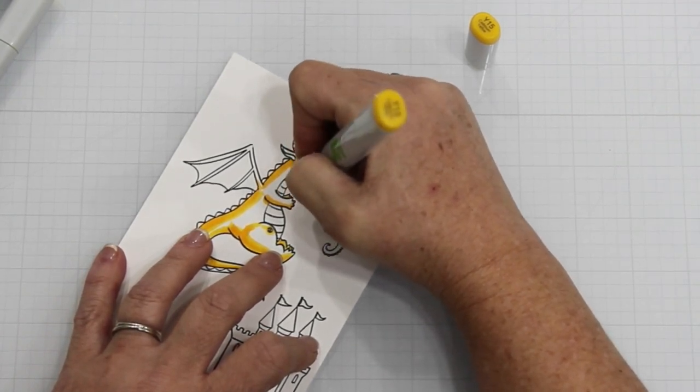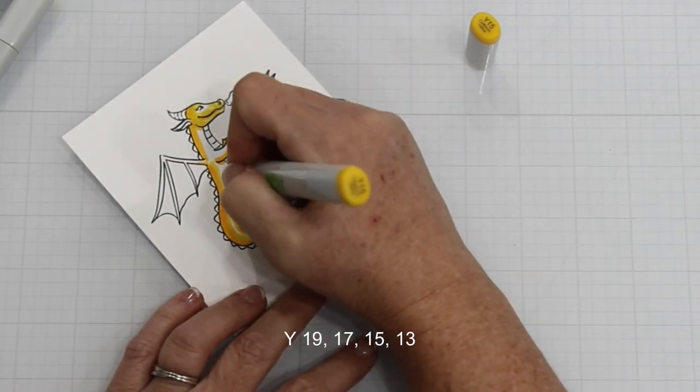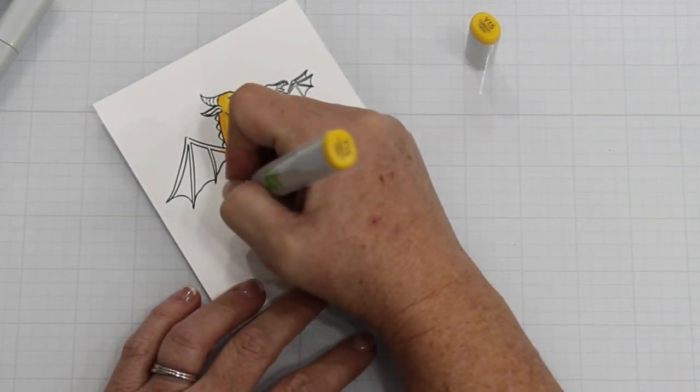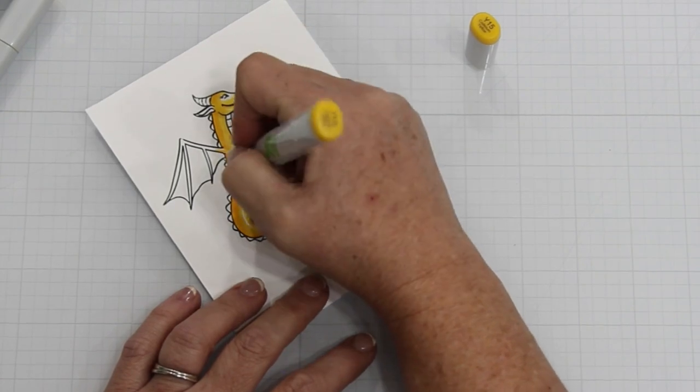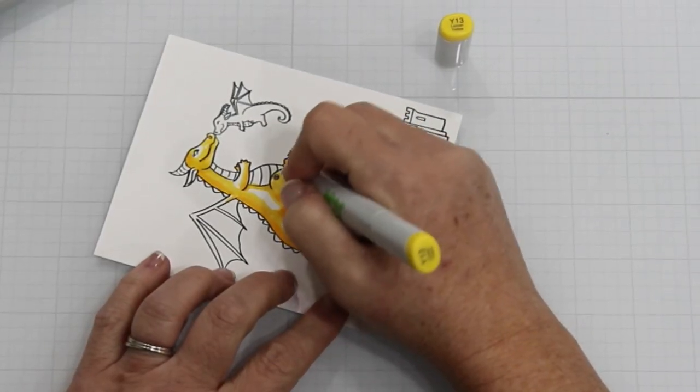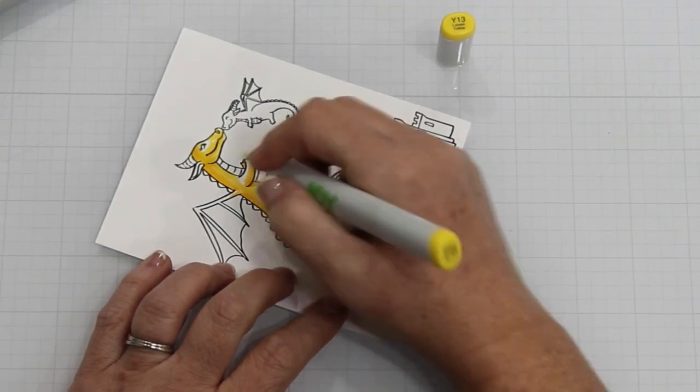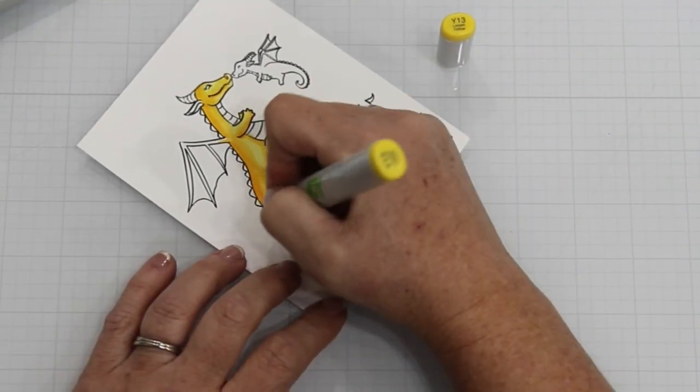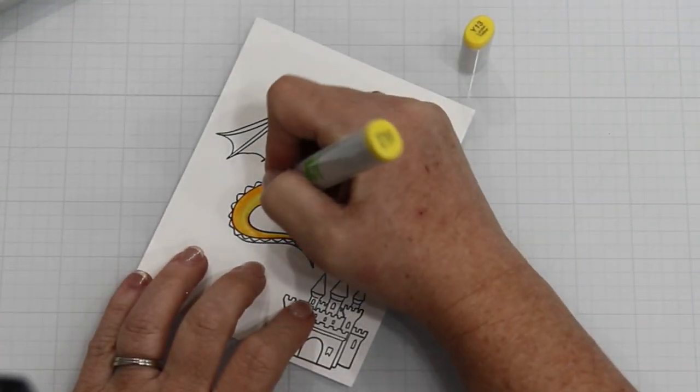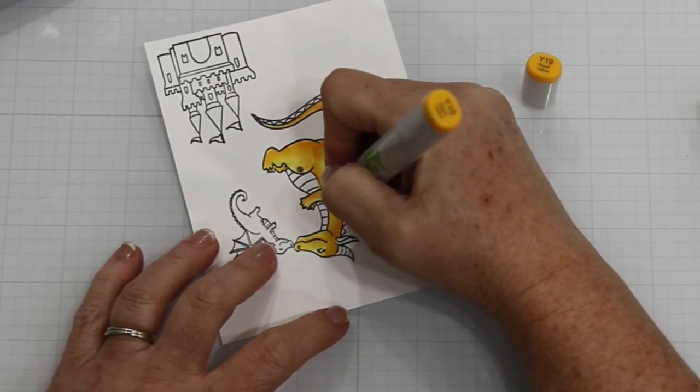Finally, I bring in the Y15, which is my mid-tone. That's the one that you're going to see the most of. If you're new to coloring, it is the main color that your eyeball sees. So you're going to color in the majority of the dragon with that Y15. And then I came in with my lightest color or my highlight color being a Y13.